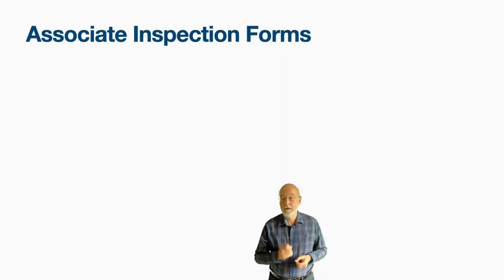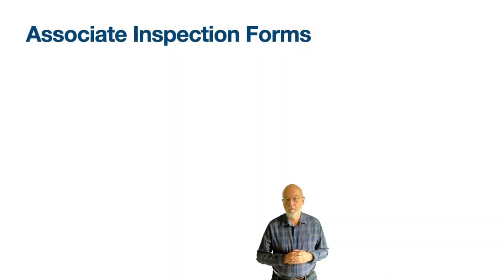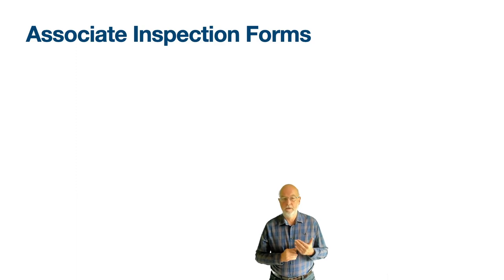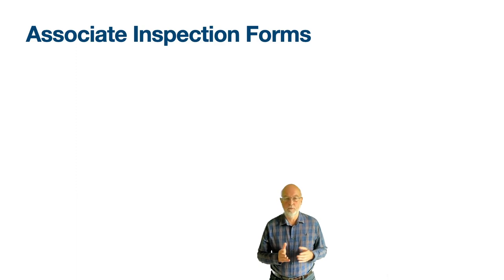An inspection form is the electronic equivalent of a paper form for an inspection. It typically contains many questions with selectable answers, text, numeric and date entries, meter readings, and the ability to upload files — for example photos, videos, and voice recordings.